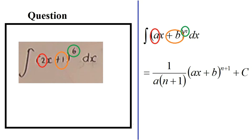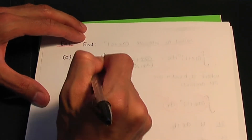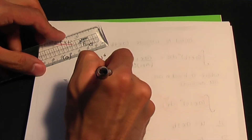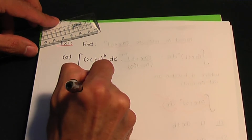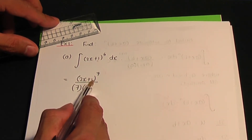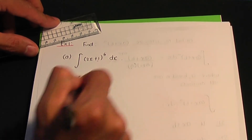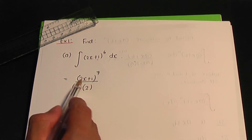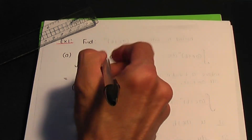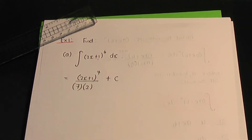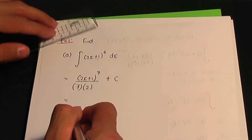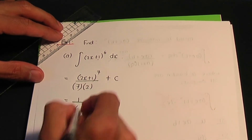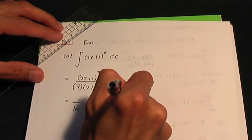Remember the result: add 1 to the power, divide by n plus 1, divide by the derivative of ax plus b, then add c. So we're going to have 2x plus 1 to the power 6 plus 1 — that's 7 — divided by 7, then divide by the derivative of 2x plus 1, which is 2. Our integral has no limits, so add c. Simplifying: 1 over 7 times 2 is 14, so the answer is (1/14)(2x+1)^7 plus c.